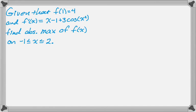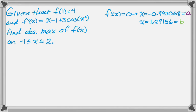So given that f of 1 is equal to 4, and f prime of x is equal to x minus 1 plus 3 cosine of x squared, we want to find the absolute maximum of f of x on the interval from negative 1 to 2. Okay. So we're going to need critical points. So if f prime of x equals 0, my calculator gives me that x is negative 0.993068, and I'm going to say that equals a, so that I can just write a. And also, x equals 1.29156, which I'm going to call b. So now we're going to set up our table.